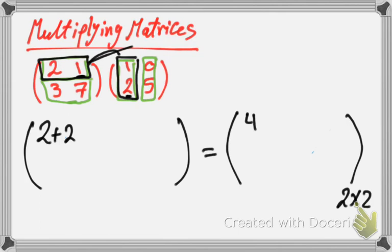Then, 2 multiply by 0 is 0. Plus, 1 by 5 is 5.